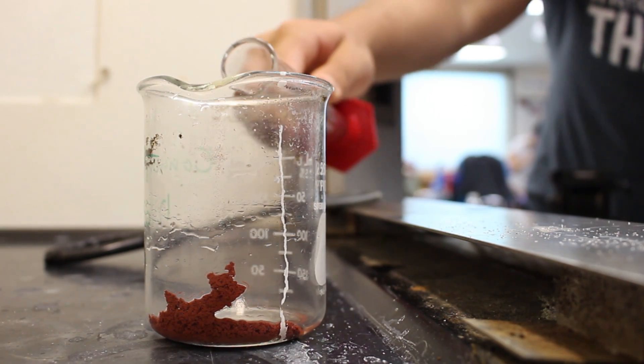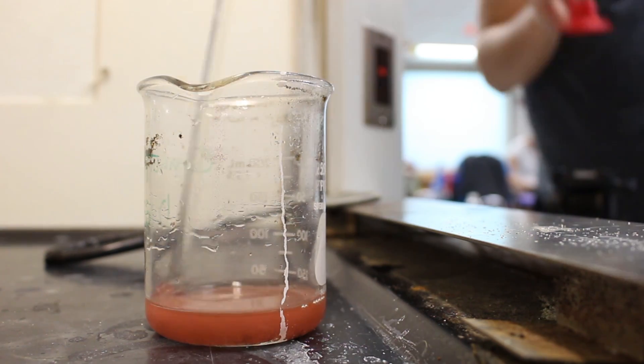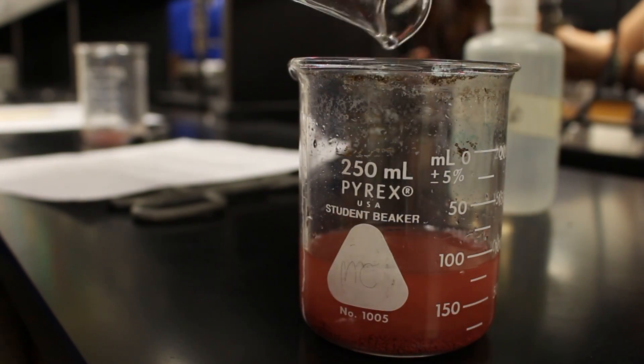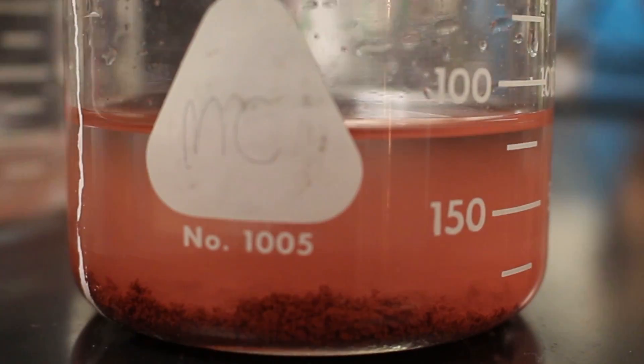Next we added 20 milliliters of 6 molar hydrochloric acid to remove any remaining zinc. We washed and decanted our copper several times to remove all supernatant solution.